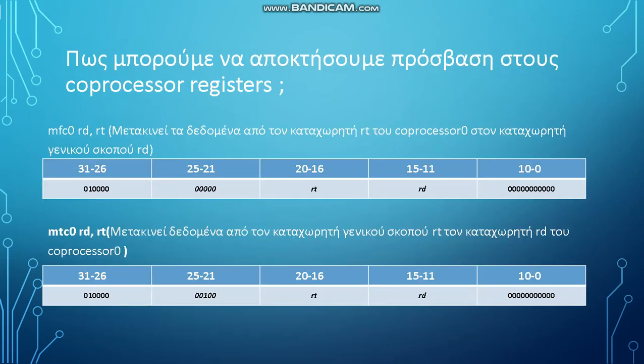How can we access these co-processor registers? Using the first instruction we can move the data from the rt register of co-processor zero to the general purpose register rd. Using the second instruction we can move data from the general purpose register rt to the rd register of co-processor zero.